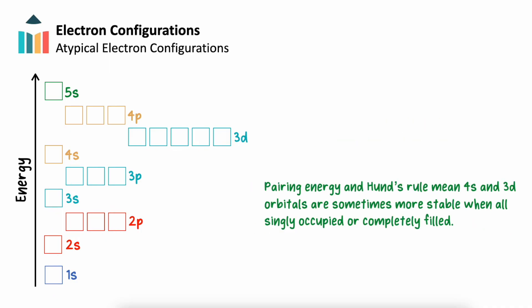There are a couple more exceptions for how electrons fill electron orbitals. One outcome of Hund's rule in electron pair repulsion is that sometimes it's more stable for 3d and 4s orbitals to either be all singly occupied or completely filled.